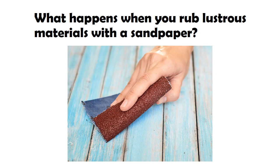What do you think will happen when you rub a lustrous material with sandpaper? If a lustrous material has lost its shine due to the deposition of some substance on it, then rubbing with sandpaper will help in the removal of that top layer, and hence will make the material shiny again.